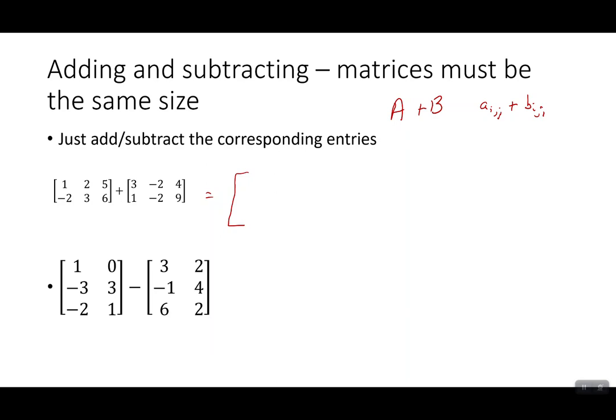It's easier just to do it than it is to probably describe it with algebra, but I'm just going to add the corresponding things. So I have the matrix 1, 2, 5, -1, 3, 6. That's a 2 by 3 matrix. And I want to add the other 2 by 3 matrix.